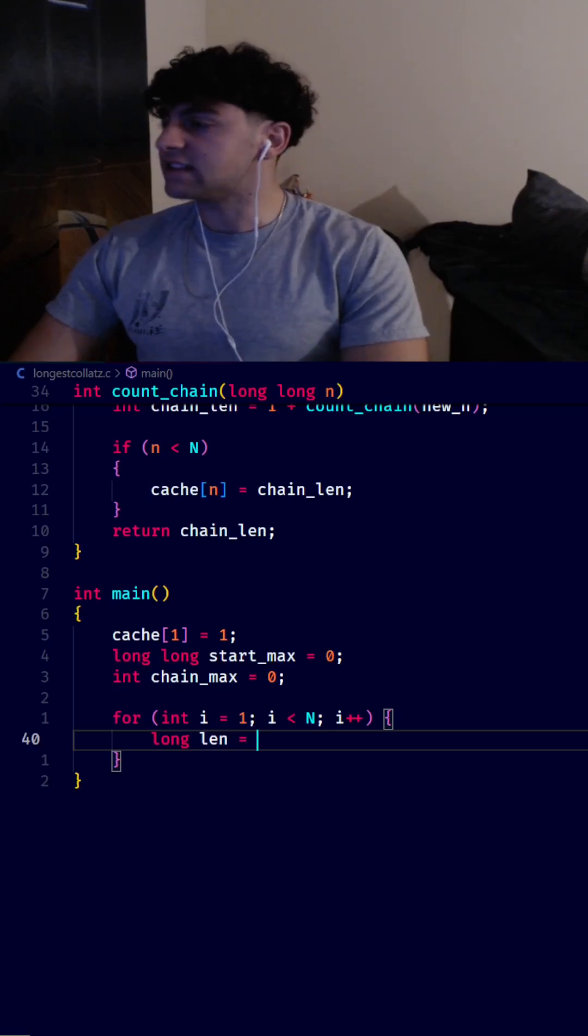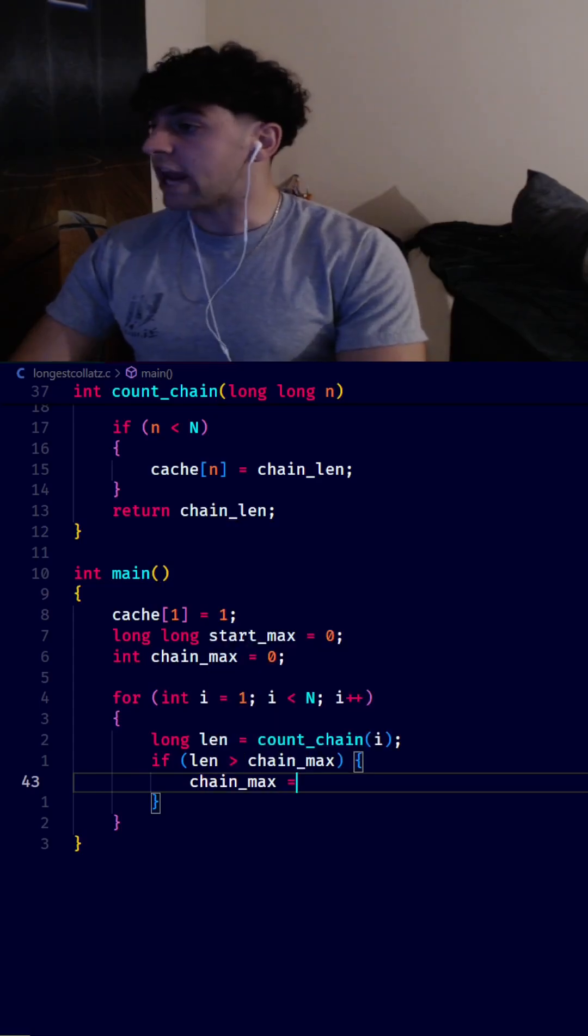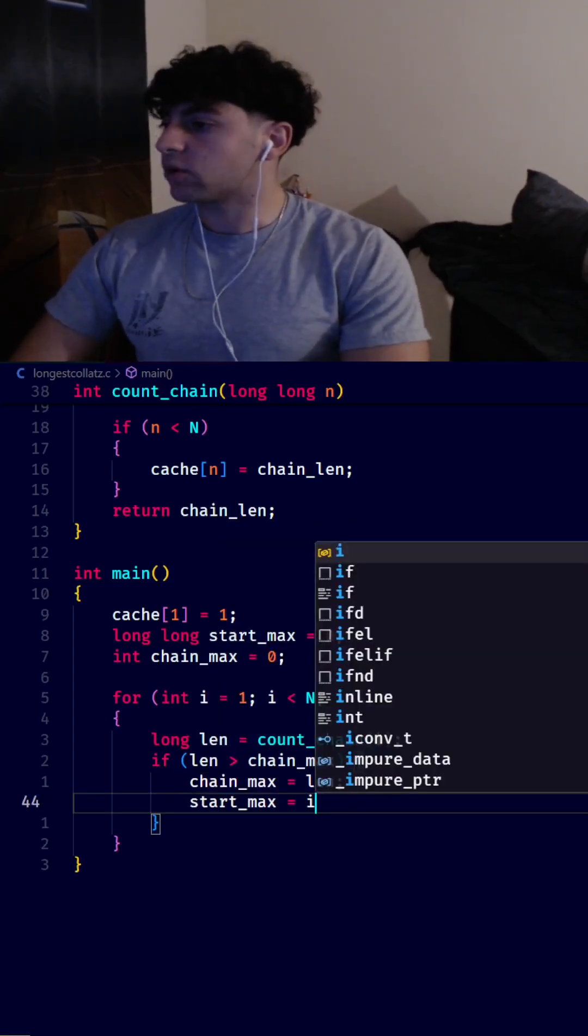And then we'll make a variable called len and set it equal to count_chain of i. Then we'll check if len is greater than chain_max. Then we'll set chain_max equal to len. And we'll set start_max equal to i.